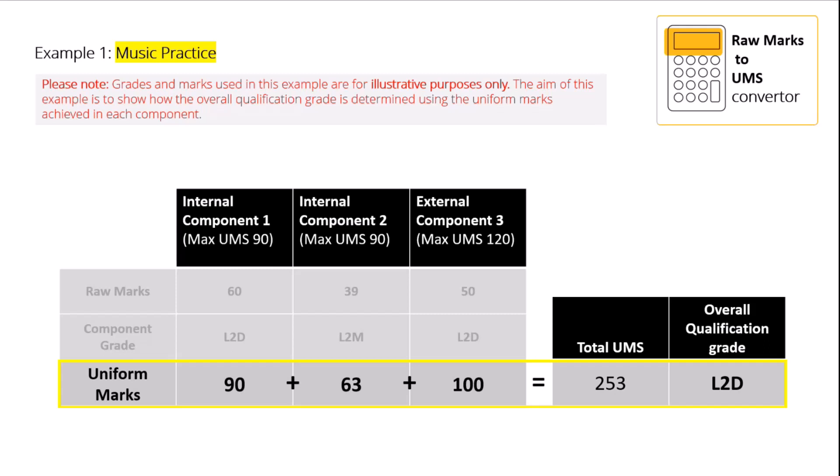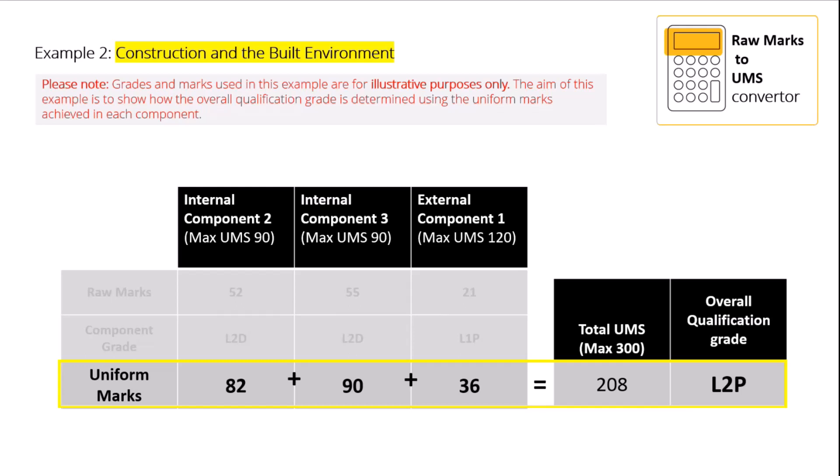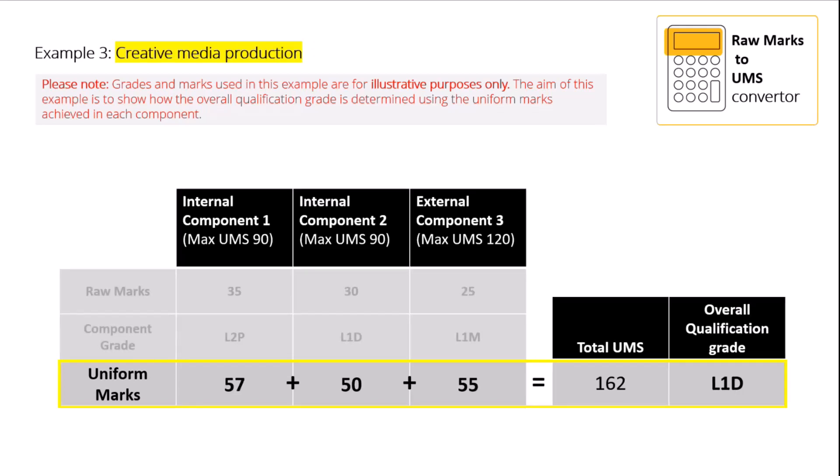Please note that grades and marks used in these examples are for illustrative purposes only, and therefore greyed out, so that the focus is on the determination of the overall qualification grade. After each assessment series, grade boundaries are set to determine uniform marks that correspond to the raw marks achieved in that particular series. The raw marks to UMS converter is a great tool to see this conversion. In another example, the learner achieves a Level 2 pass overall, and in another, the learner achieves a Level 1 distinction overall.